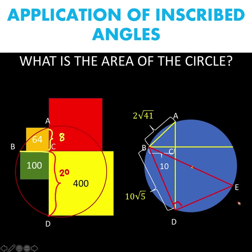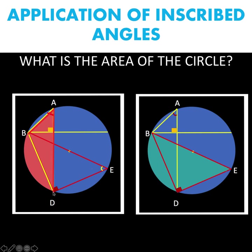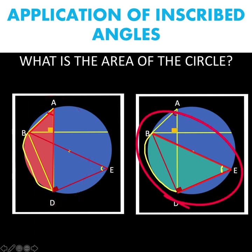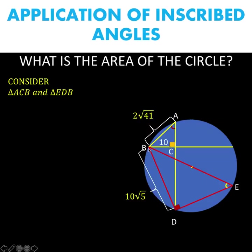Another thing to notice: with respect to triangle BAD, angle BAD has intercepted arc BD. Similarly, angle BED also has intercepted arc BD. Since both angles BAD and BED intercept the same arc BD, by the corollary of the inscribed angle theorem, we conclude that angle BAD is congruent to angle BED.